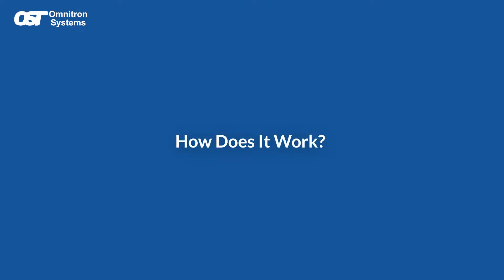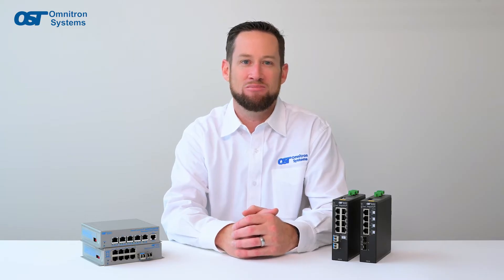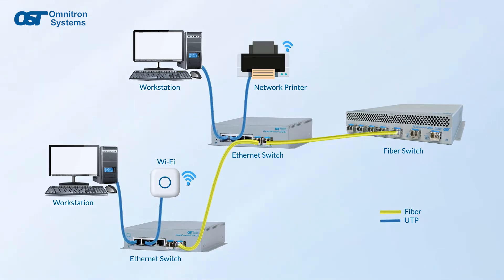But how does an Ethernet switch work? When one device wants to send data to another device on the network, it sends it to the Ethernet switch. The Ethernet switch receives packets of data, which are then housed within an Ethernet frame. The frame contains identifying data, such as the destination MAC address, which helps the switch determine which port to forward it through to reach its destination.